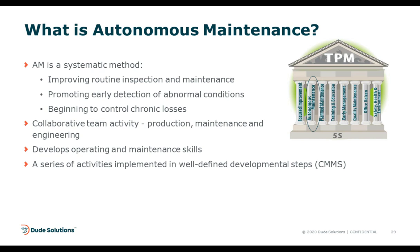Autonomous maintenance is one of the pillars within TPM and is tightly related to maintenance operations. It's about improving routine inspection and maintenance, promoting early detection of abnormal conditions, and controlling those chronic losses that lead to profit killers — especially downtime. It's a collaborative team activity: not just maintenance technicians, but production, engineering, and maintenance are all responsible for those assets. It also helps develop operating and maintenance skill sets — improving what operators can do. CMMS is a great way to identify those activities, implement them, and create those steps.